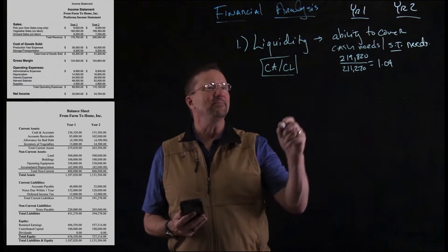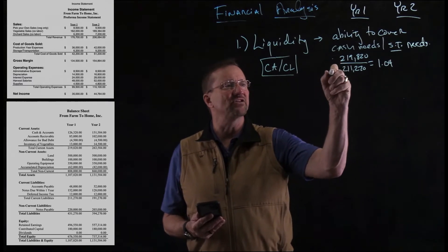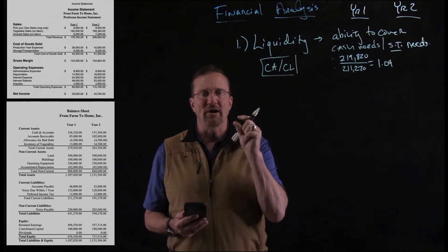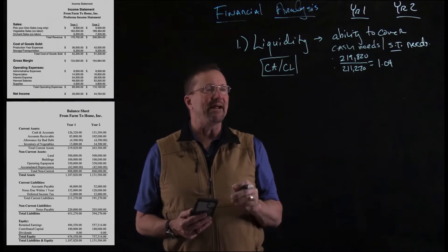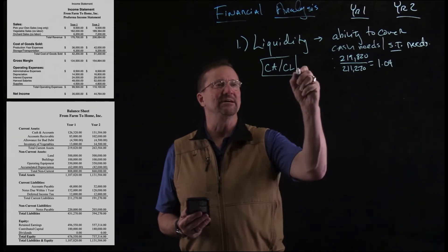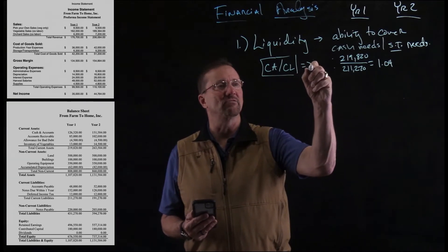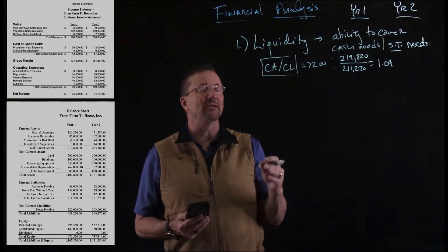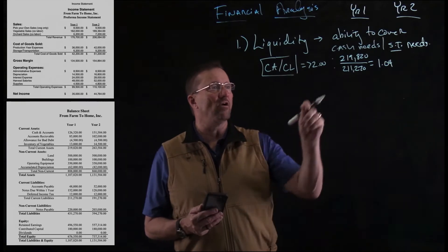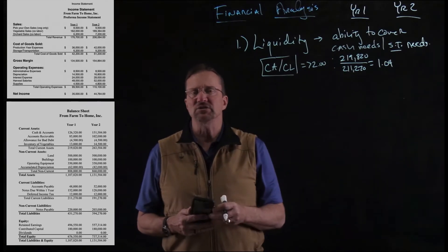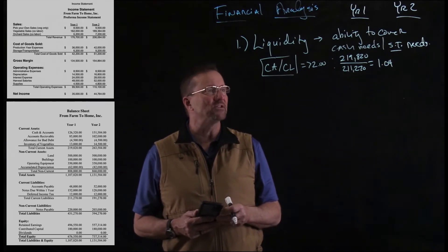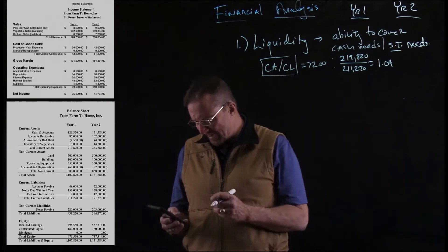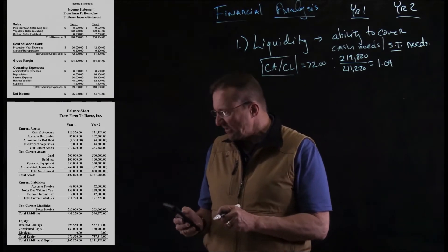Now what that means is that means that your current assets and your current liabilities are dang near equal. Now that is liquid. In fact, really you'd like this to be greater than two as a goal. And so in this case, it's barely even 1.04, almost the same. So that's not a good situation. We don't want to be in that situation. So let's see what happened as we move into year two.